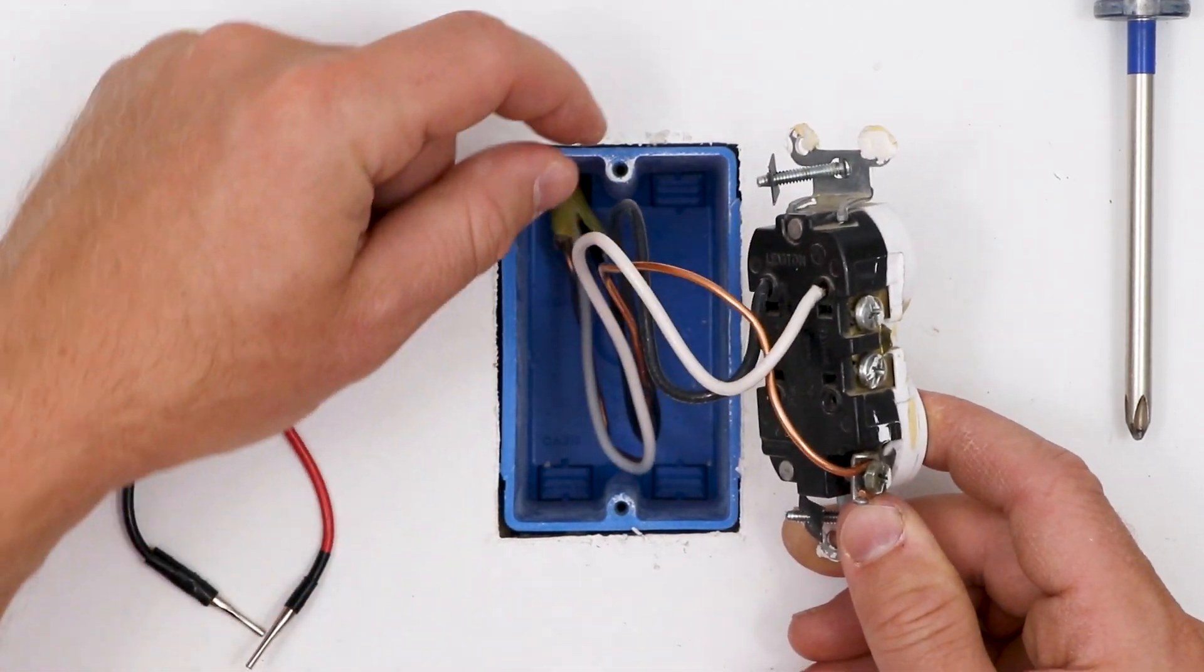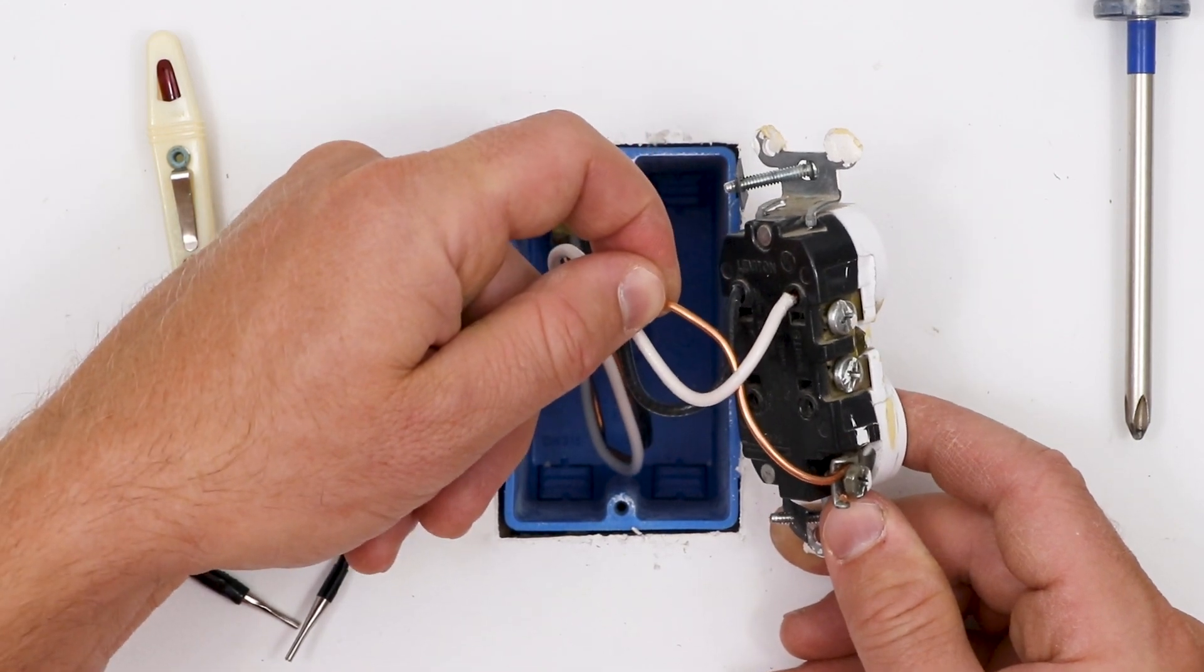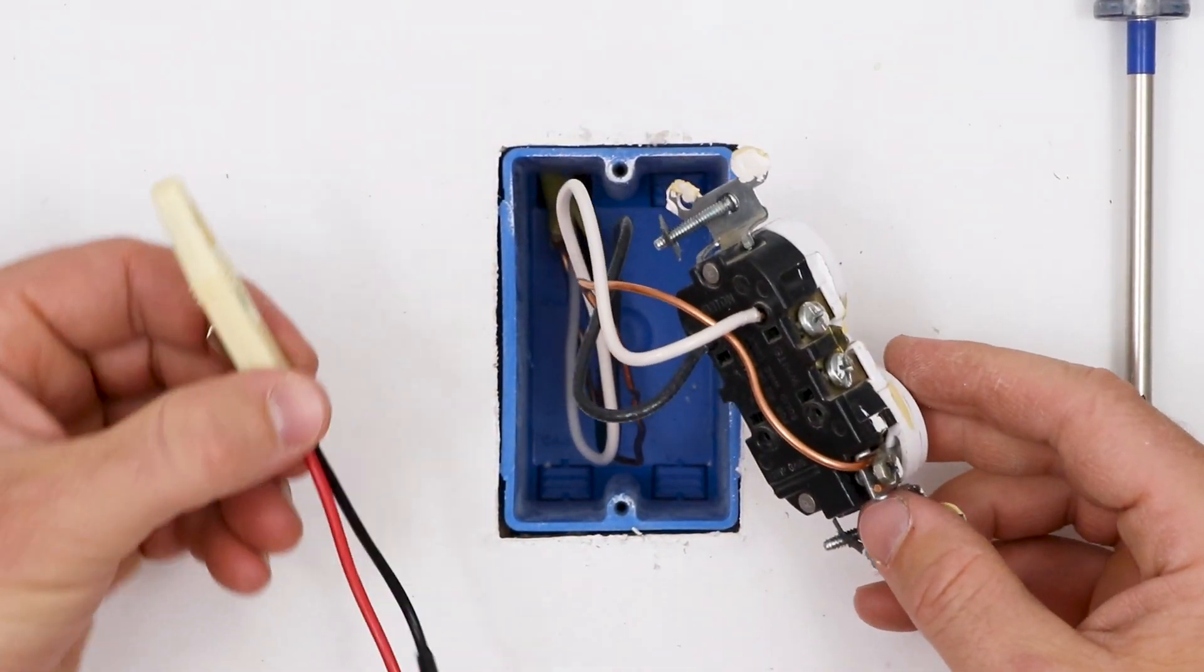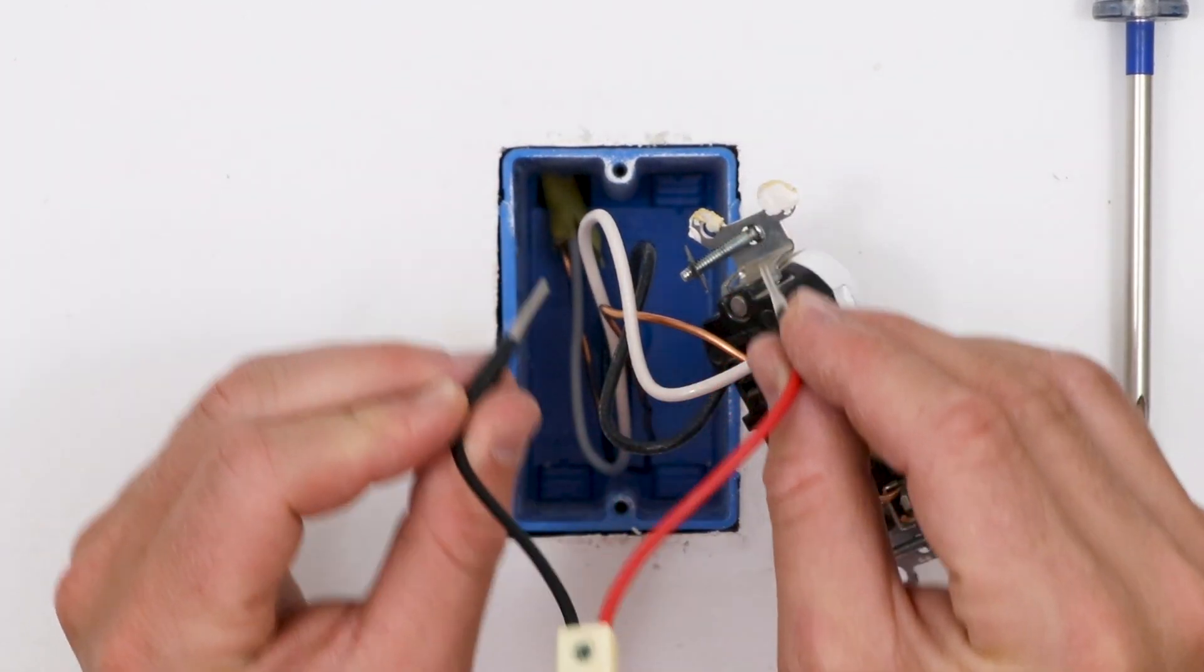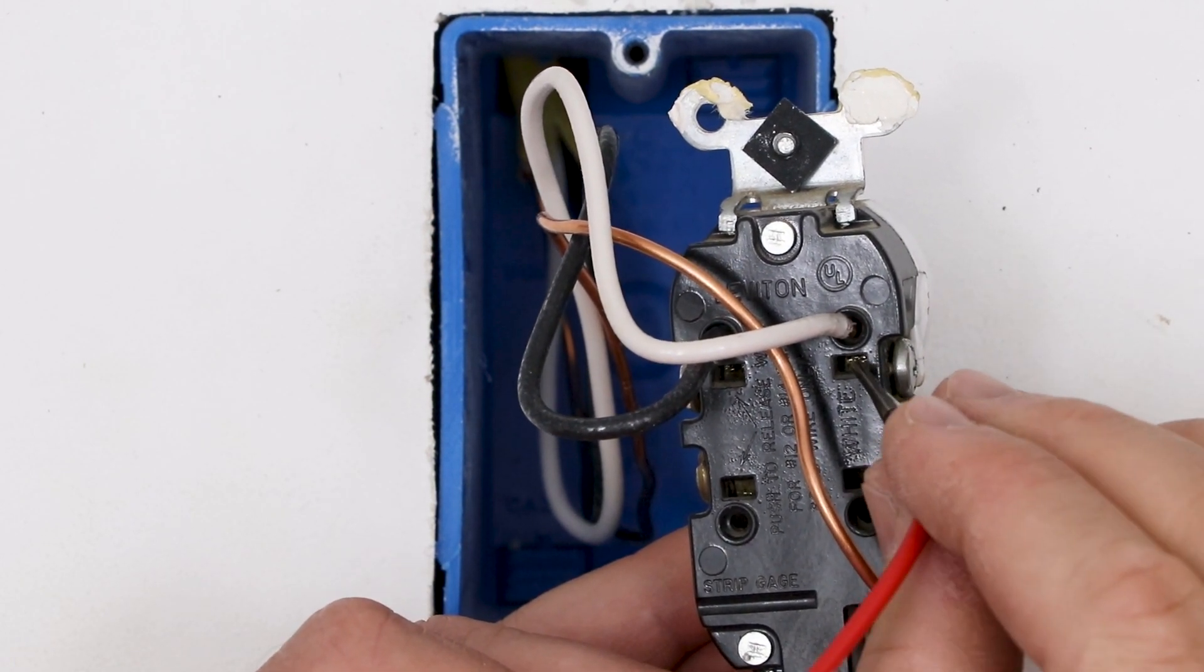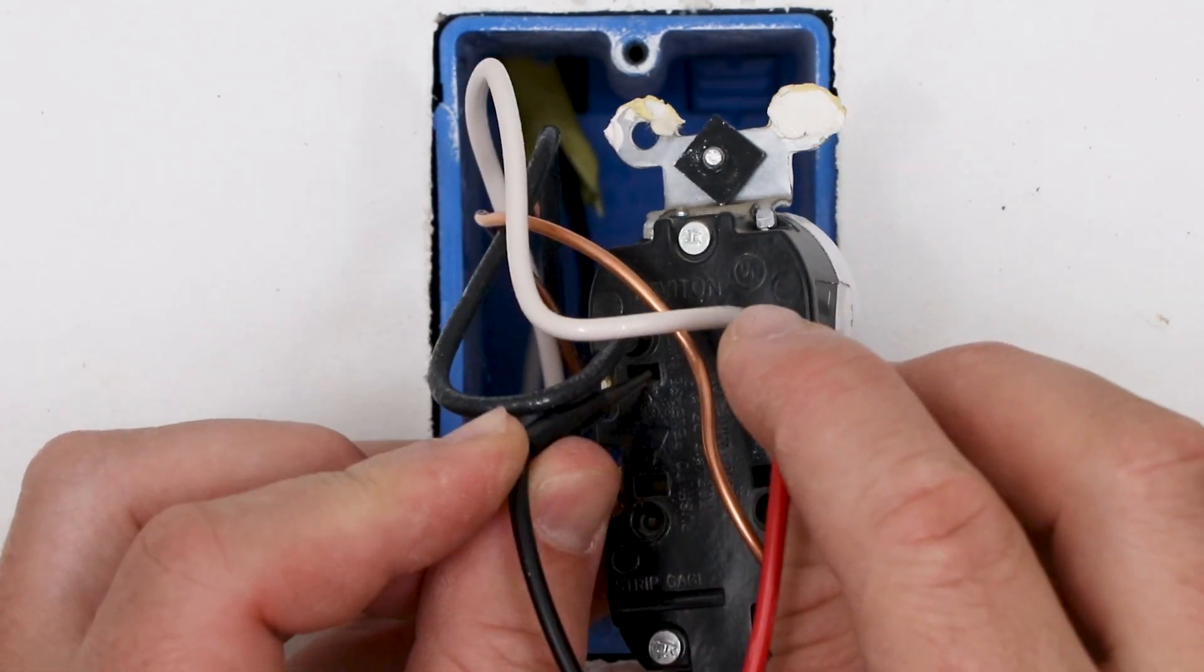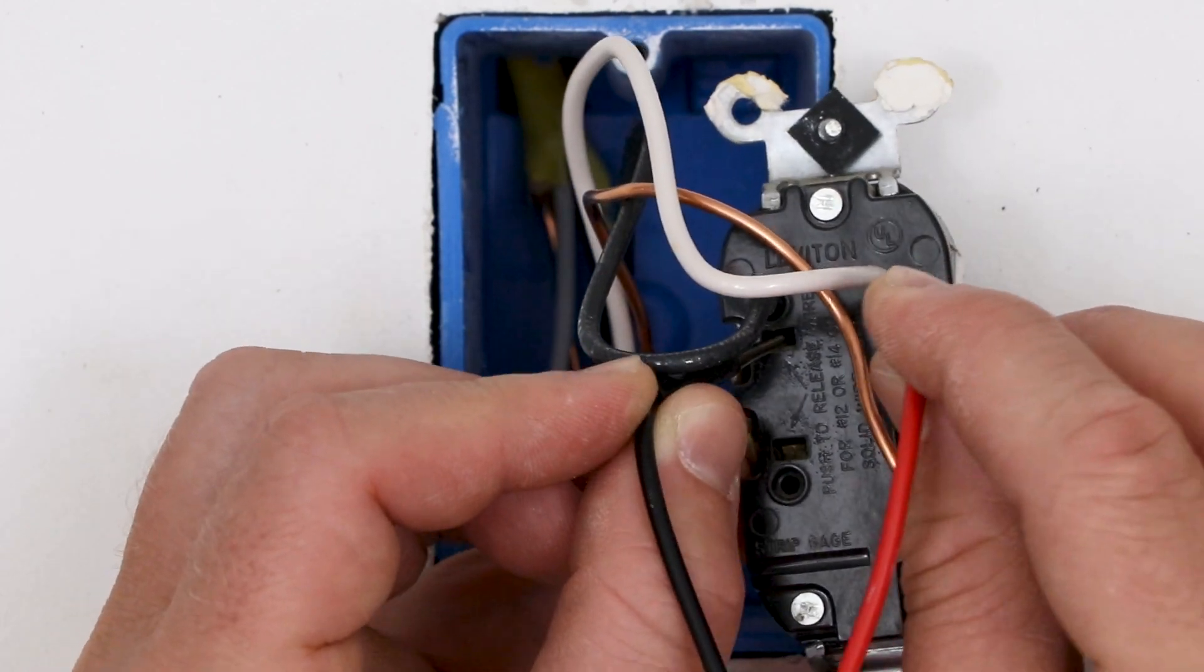We got our white, which is our neutral, our black, which is our hot, and our bare copper, which is our ground. And these are push-in fittings on the back, and I want to test the voltage as close as I can to the ends of these wires. And so I've got my voltage tester, and there's a little slot right here underneath where the push-in wire goes. And I'm able to put my lead or my probe in there on either side, and I'm still not getting any voltage detected, so I am good to go at removing these.